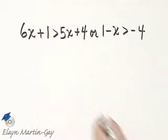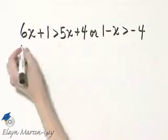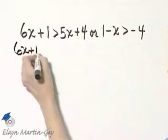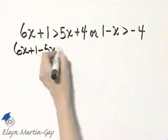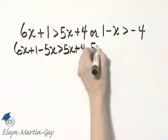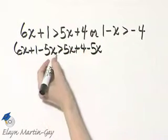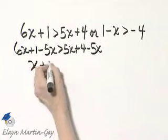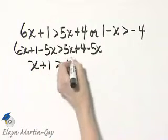Let's solve the first inequality. I will subtract 5x from both sides. So I'll have the left side, I'll subtract 5x, and the right side, I'll subtract 5x. Notice I have 6x minus 5x, which is x, so that's x plus 1 is greater than 4.